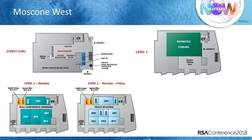On Level 2 of Moscone West we have session rooms, and if you're a speaker at the conference, we also have a speaker office and a speaker lounge — you'll be required to check in at the speaker office when you arrive. On Level 3, we have our keynote sessions, forums, lunchtime forums on Wednesday and Thursday, and a keynote viewing area.